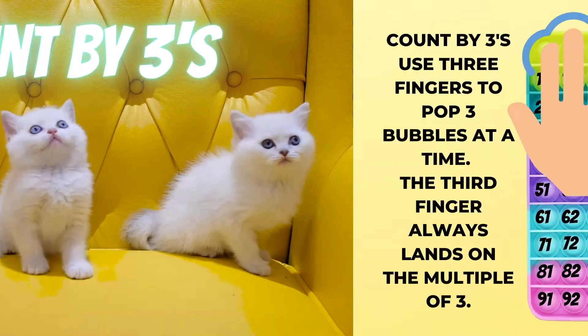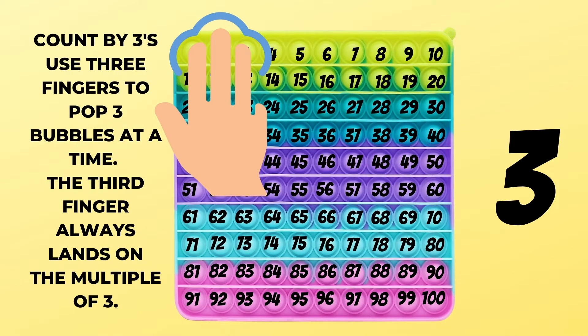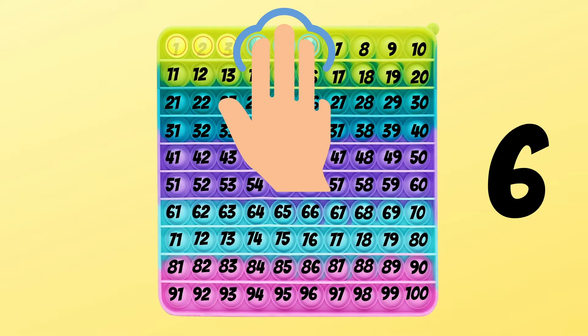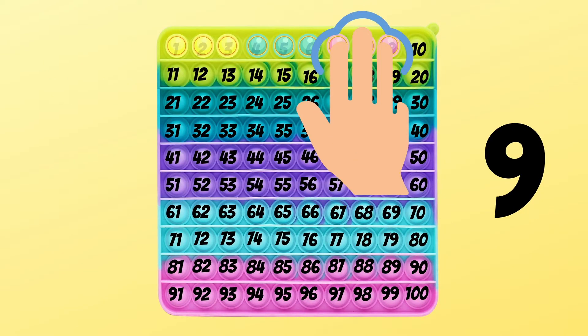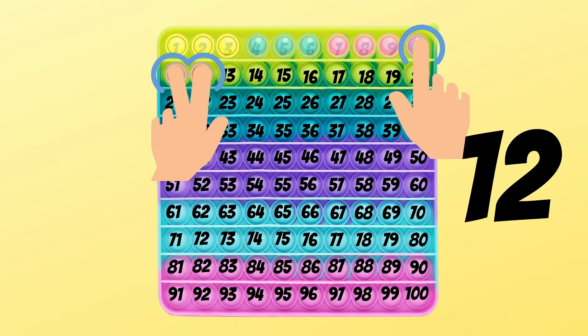Now let's count by threes. So you're using three fingers. You can pop three bubbles at a time, and your third finger is always landing on the multiples: 3, 6, 9, 12.